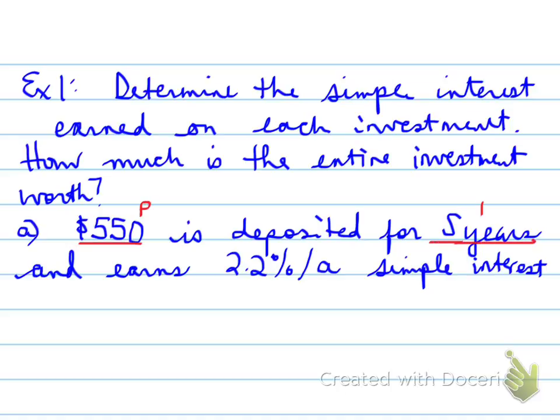So, $550 is the current value, and that's P. That's right now. That's the present value. Five years is the time. So that's T. The rate of interest is 2.2% per annum. So that's your R. But remember that R has to be a decimal.